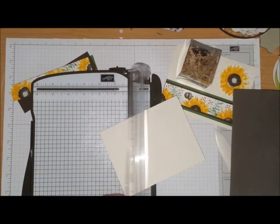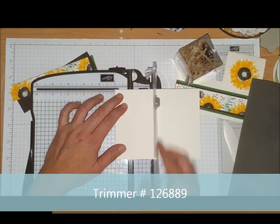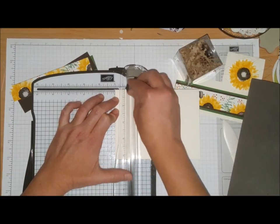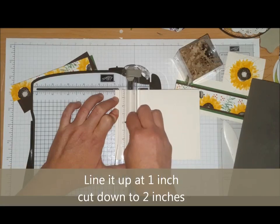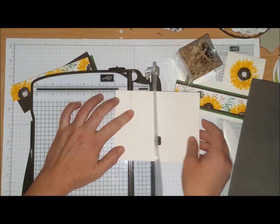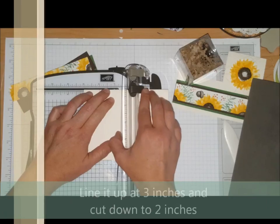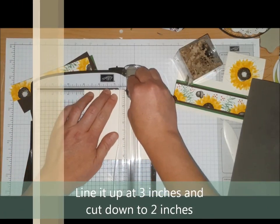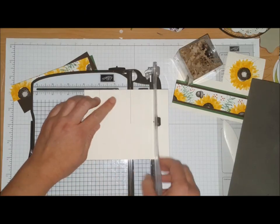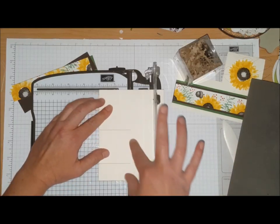I have my Stampin' Trimmer and what I'm going to do is I'm going to line the cardstock up at one inch and I'm going to cut down to the two inch mark on the side of the trimmer. I'm then going to put my paper in at three inches and I'm going to do the same thing. I'm going to cut down to the two inch mark.